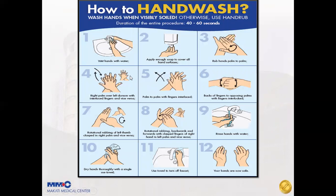For hand washing, the difference is we use soap and water, and the duration of the entire procedure is 40 to 60 seconds. Wet your hands with water, apply enough soap to cover all surfaces, then perform the same six steps. Afterwards, rinse hands with water, dry hands thoroughly with a single-use towel, and remember to use the towel to turn off the faucet to avoid contamination. Your hands are now safe.